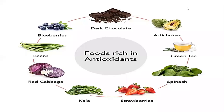Let's discuss the solution to free radicals or reactive oxygen species. When you consume food rich in antioxidants, this can lower the free radicals level in our living systems. Antioxidants can basically be consumed through these foods: dark chocolate, artichokes, green teas, spinach, strawberry, kale, red cabbage, beans, blueberries, and mostly green vegetables.